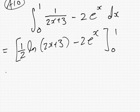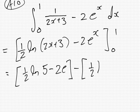Okay, so we put in the 1, so we have a half log 5 minus 2e, and then we put in the 0. That's a half log 3 minus 2. So that's 0.5 log(5 minus 2e) power 1 minus 0.5 log 3 plus 2. And I got here minus 3.18.